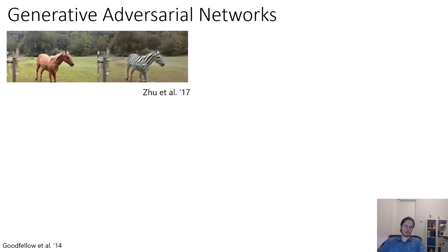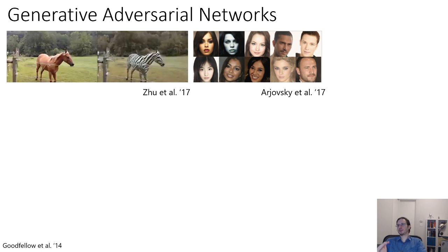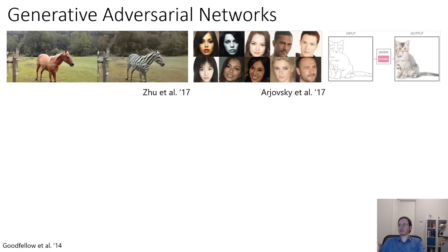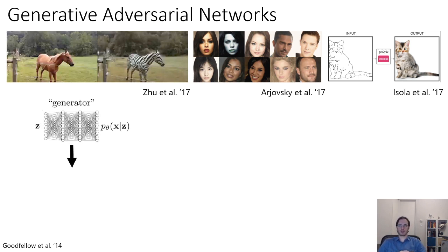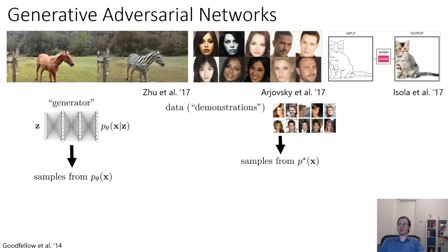A generative adversarial network is many things — a method for turning horses into zebras, producing very realistic faces, turning line drawings into cats — but what it really is, is an approach to generative modeling. It's an approach to learn a neural network that captures a particular given data distribution, such as the distribution of realistic faces, cats, or zebras. They consist of two neural networks. A generator network takes in random noise z and turns it into some sample x, which should correspond to samples that resemble the data distribution. So if you train this system on faces, the sample x's should look like realistic faces.